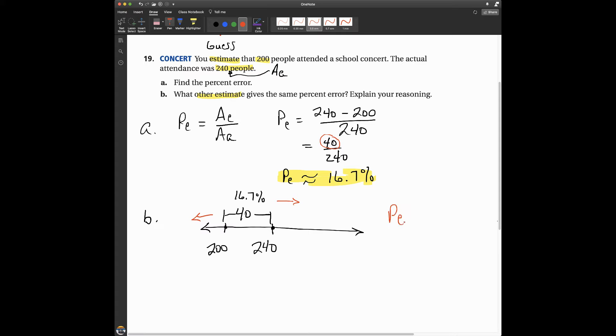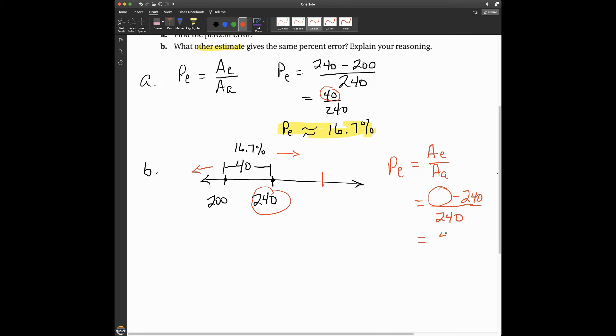So, when I calculate the percent of error, the amount of the error divided by the actual amount, that numerator needs to be 40. So, what should I put here on this number line so that I get 40 over 240?